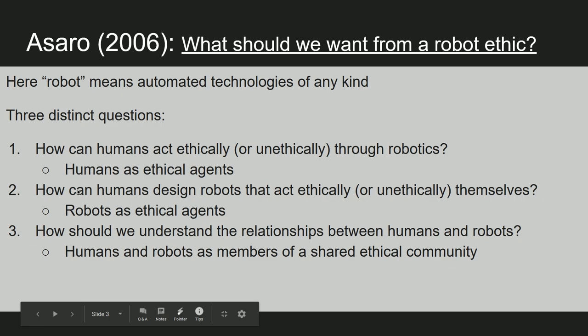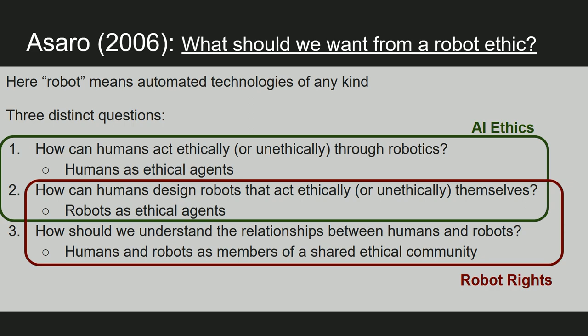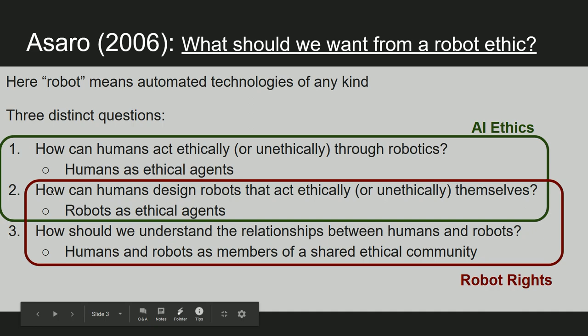Maybe some of these questions are more realistic or pressing than others. Peter Saro mentions all three as the kinds of things people think about when they think about robot ethics. I want to divide them into two groups. The top two questions — how humans act ethically through robots, and what robots are doing that humans are designing — are the central questions in the field of AI ethics. The third question, or perhaps the second and third combined, relates to the discussion of robot rights: taking seriously the robot as an agent and thinking about how it fits into an ethical community.